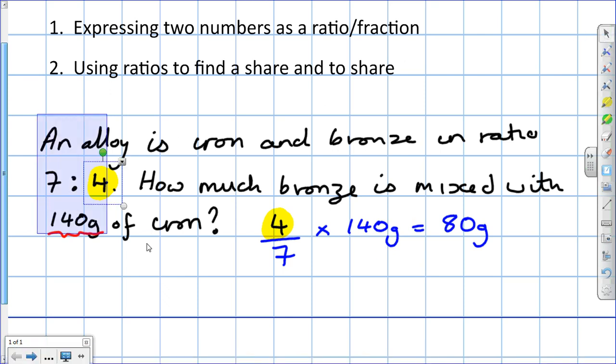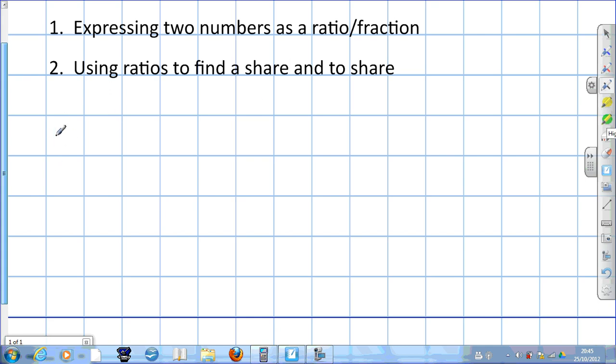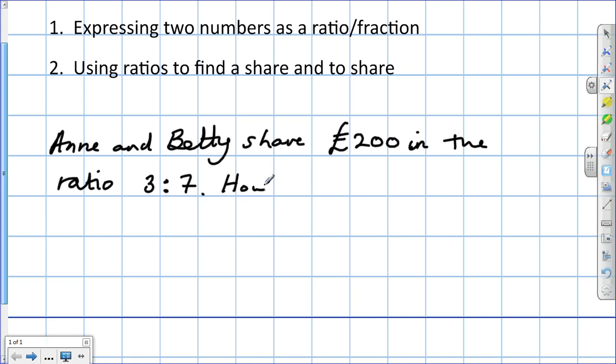Now, what about if we know the total and we're trying to find how much one person gets? I'll give you an example. Ann and Betty share 200 pounds in the ratio of 3 to 7. How much does Betty get?